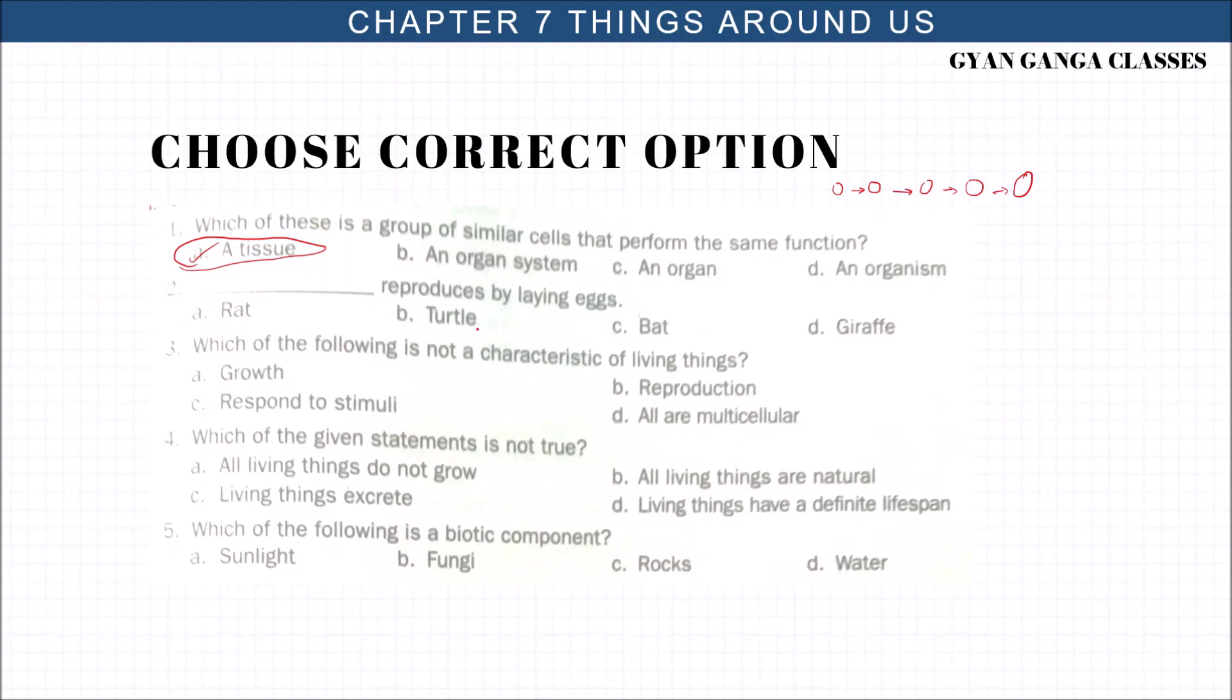Rat is a mammal, giraffe is a mammal, so turtle is the one who reproduces by laying eggs. Which of the following is not a characteristic of living things? Growth, reproduction, response to stimuli, or all are multicellular? Yes, D all are multicellular. This is not a characteristic.